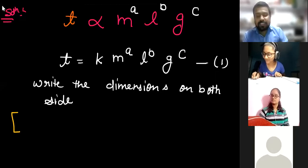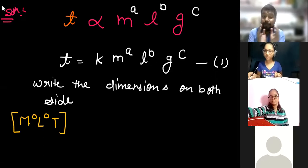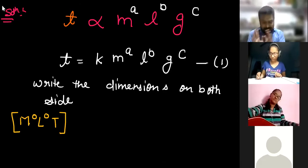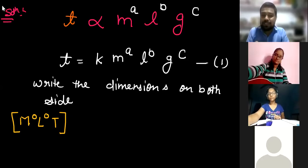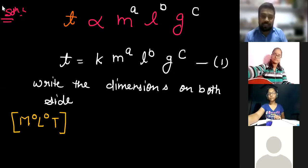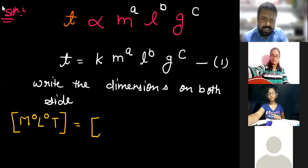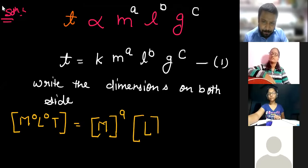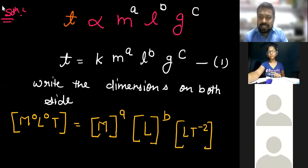Write it as M⁰L⁰T¹ for clarity when comparing powers. K is a constant and is dimensionless. Dimension of mass M is M, to the power A. Dimension of length L is L, to the power B. Dimension of gravity g is LT⁻², to the power C — so it becomes L^C · T^(−2C).